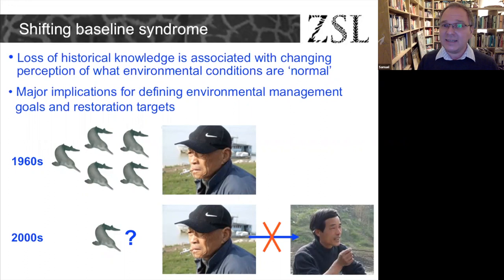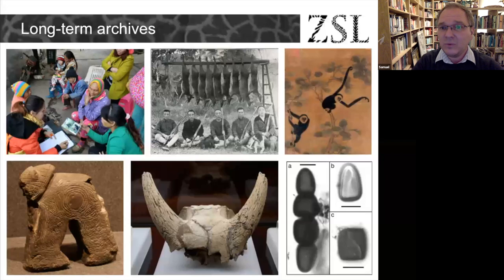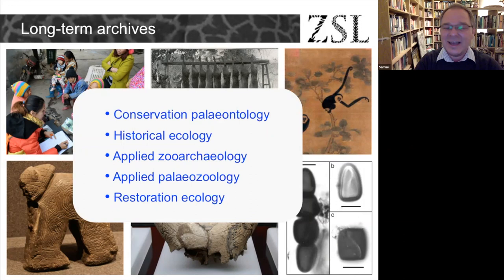There are a range of long-term archives that can be used to gain a better understanding of the past across different temporal resolutions. These have been used to develop related disciplines including conservation paleontology, historical ecology, applied zooarchaeology and applied paleozoology, and restoration ecology — all of which try to use evidence from the past to inform the present and guide conservation and environmental management.